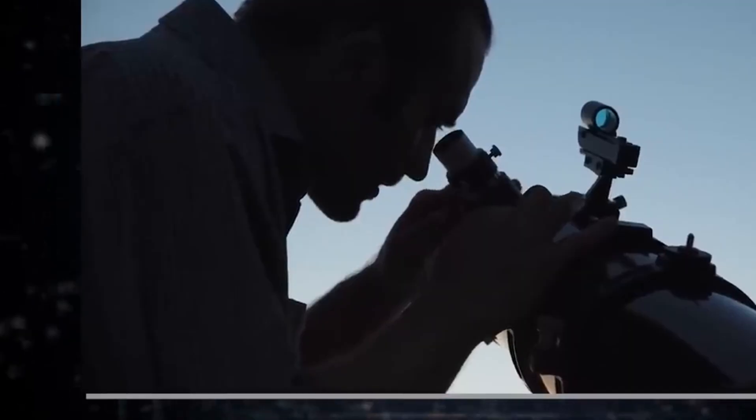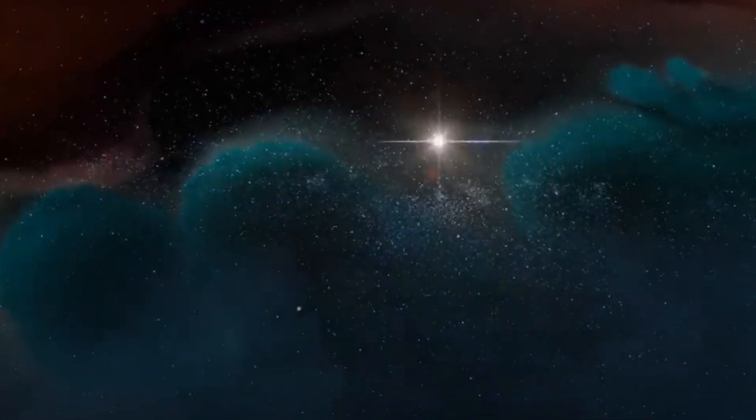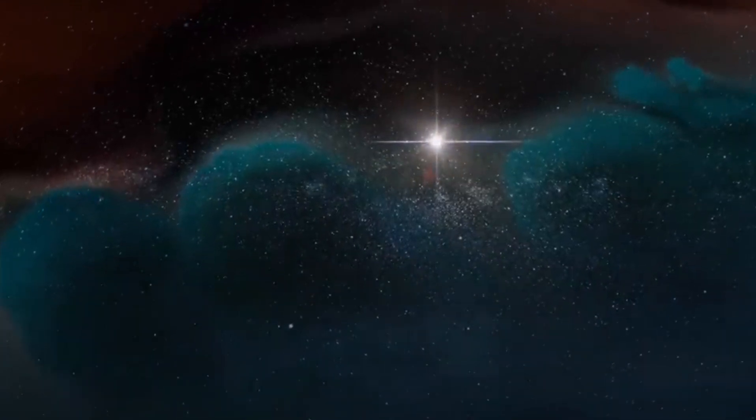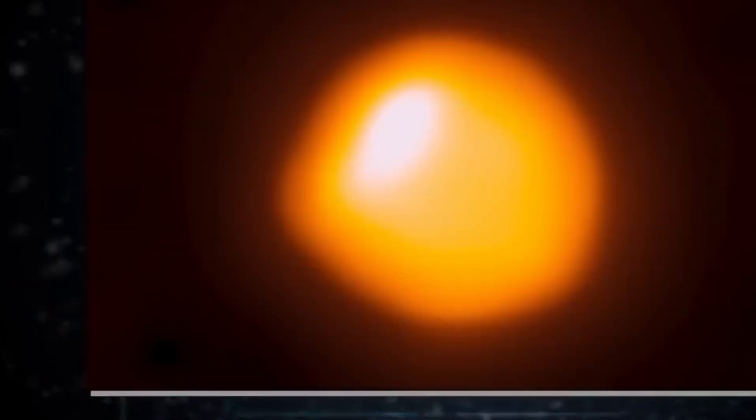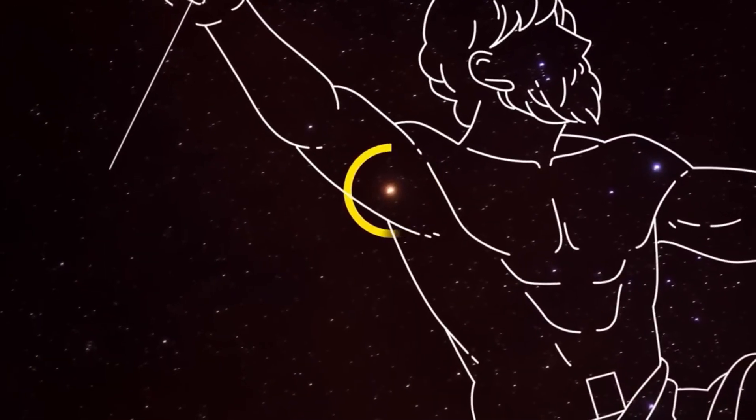Nowadays, Betelgeuse is one of the largest stars we know, stretching more than 700 million miles in diameter. However, it's no longer as scorching as it once was; its surface temperature is around 5,800 degrees Fahrenheit, cooler than the sun.